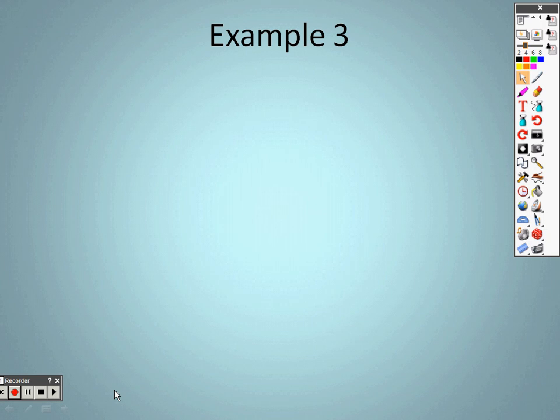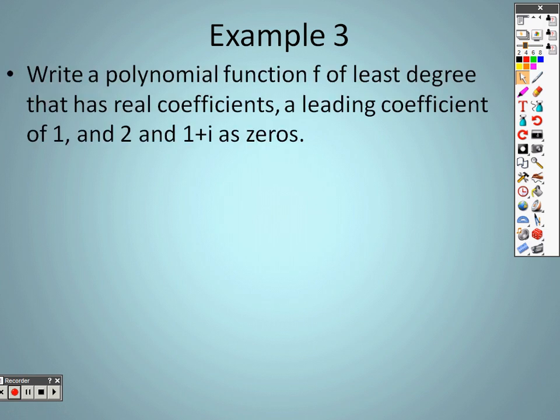Continuing on with example 3 in section 6.7, the fundamental theorem of algebra. I want to write a polynomial function f of least degree that has real coefficients, a leading coefficient of 1, and 2 and 1+i as zeros.